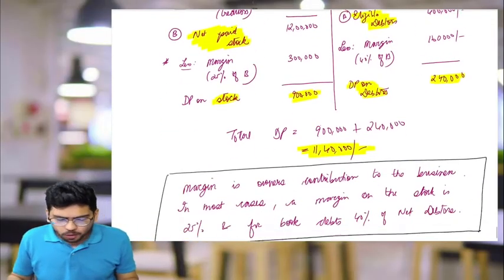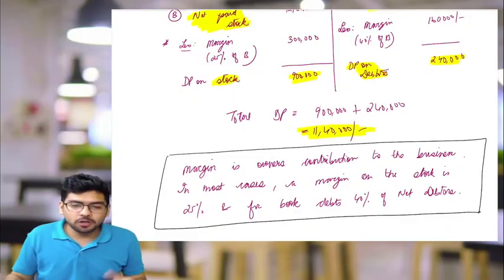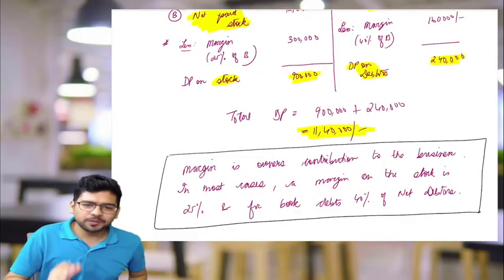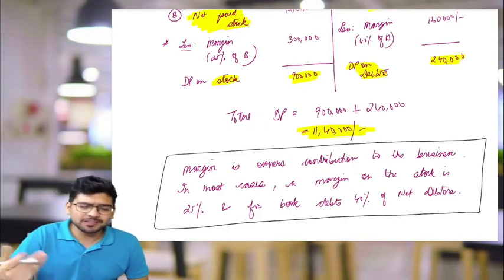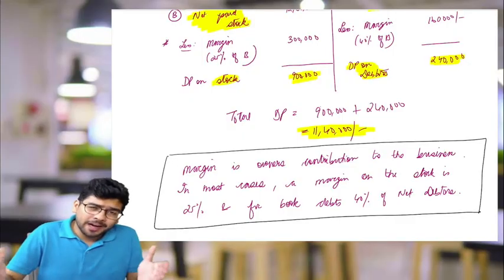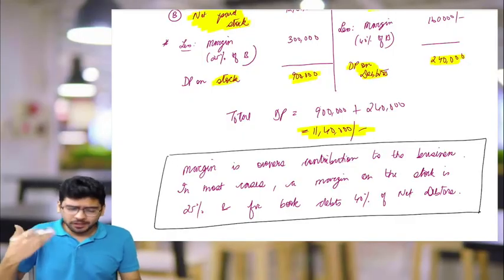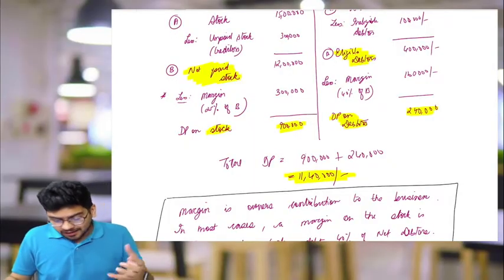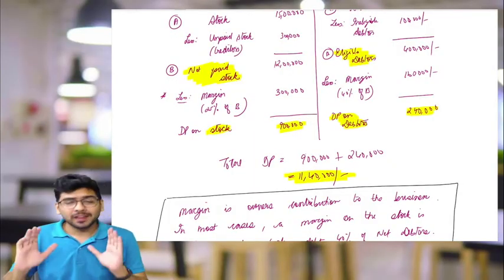What is this margin? I have written a small note regarding margin. Margin is basically the owner's contribution to the business. In most cases, margin on stock is 25% and for book debts - that means debtors - it is 40% of net debtors. But it varies from bank to bank and from industry to industry. This is just a hypothetical case which I have taken, and this is how drawing power is calculated.